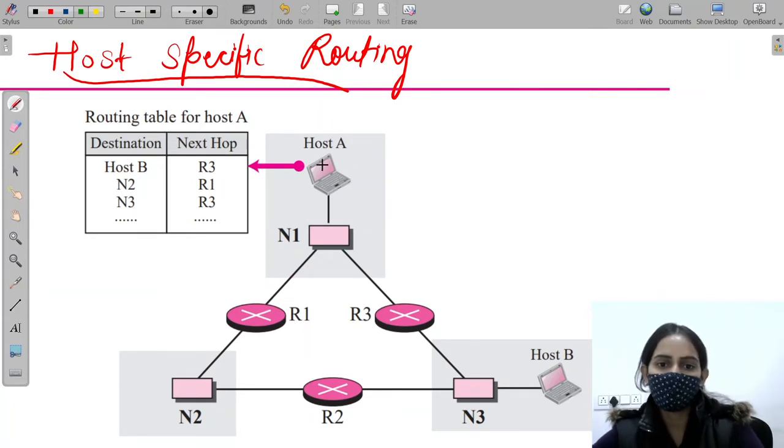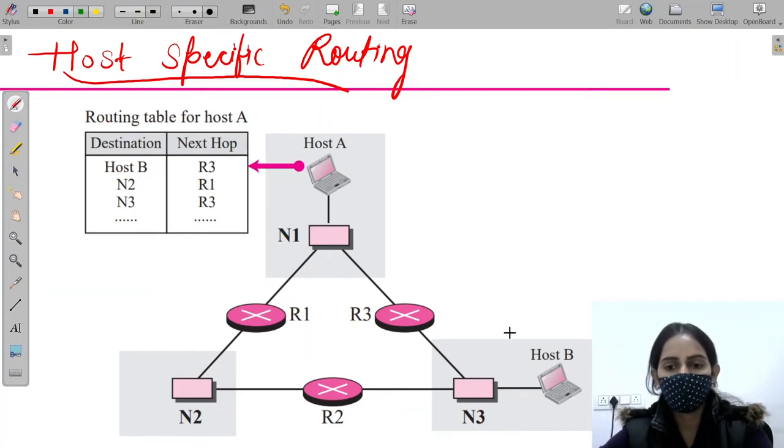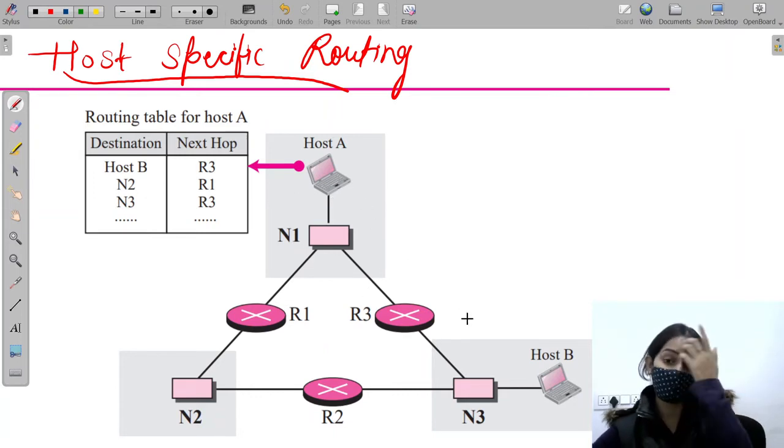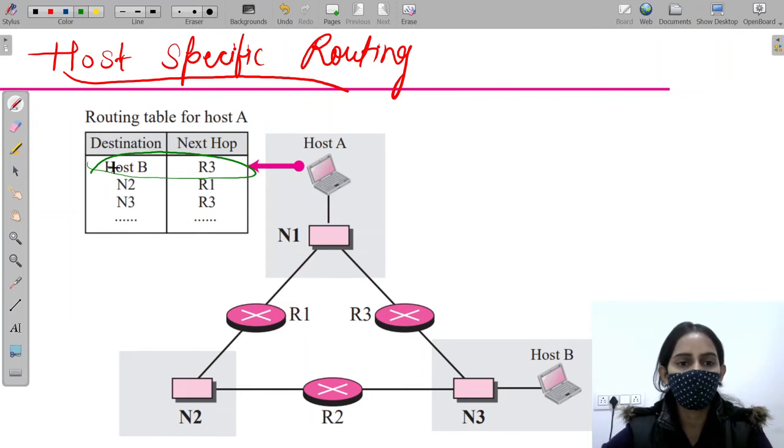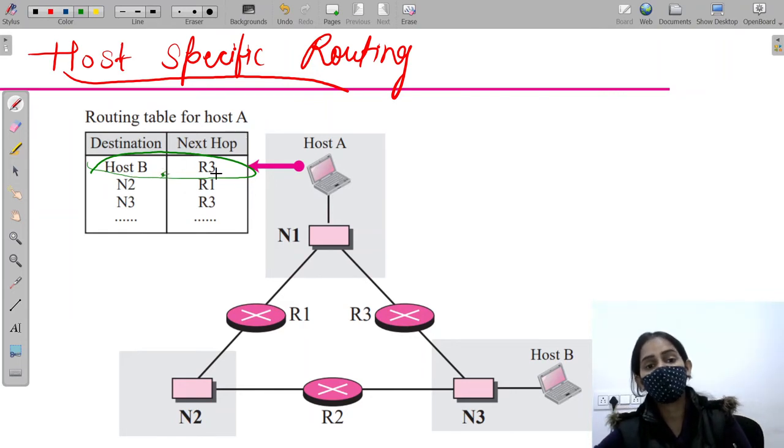Suppose this is your source and this is the destination, and you want to send some packets from your source to destination. Here you can see that it is specifically mentioned that if your destination is Host B, then go through path R3. So this path will be followed.